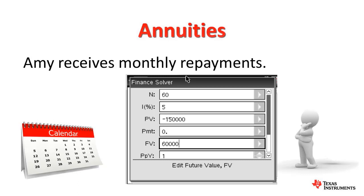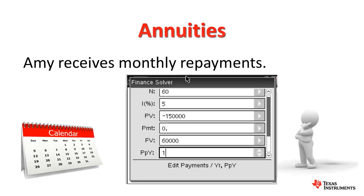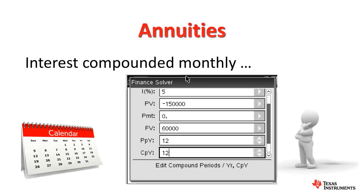Now tab down to payments per year. Amy receives monthly payments — in other words, 12 per year. She could have elected to receive fortnightly payments; if we were to change this, we would also need to change the original value of N to reflect the increased number of payments over the five-year period. Tab down to the number of compounding periods per year. The problem stated that the interest was to be compounded monthly, so there are 12 compounding periods per year.